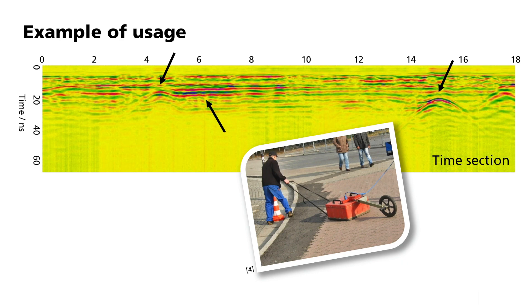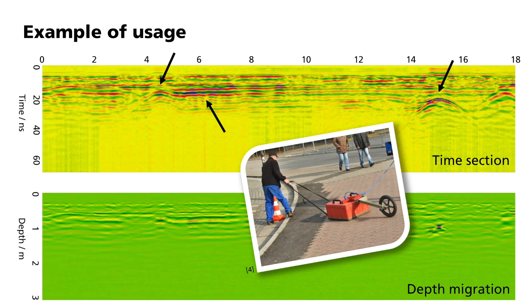If this section is migrated, this image of the subsurface results. The hyperbole are now visible as points that are about one meter deep. In this urban area, point-like reflectors are usually cross-sections of cables or pipes.